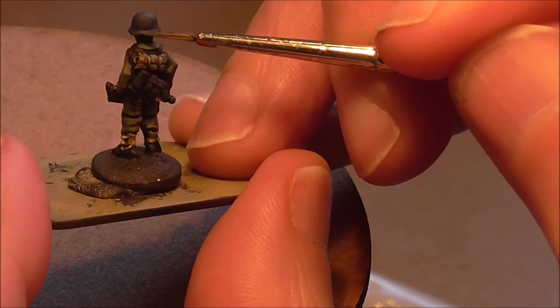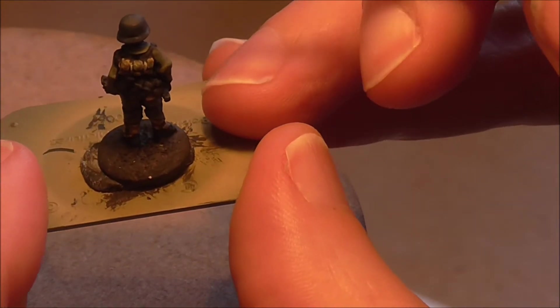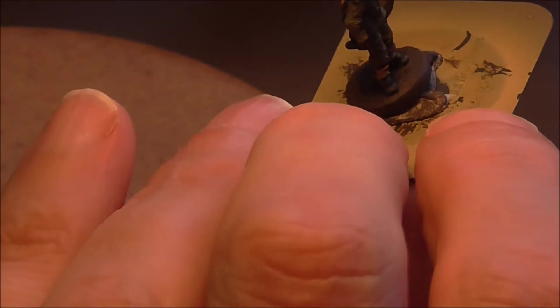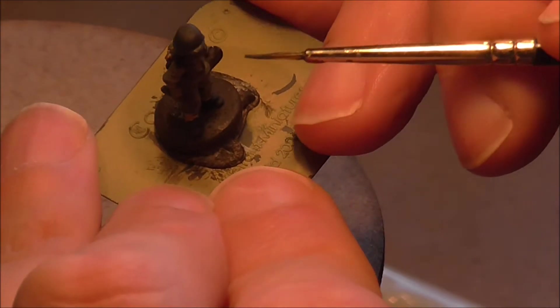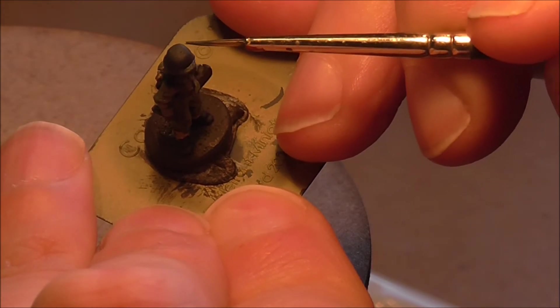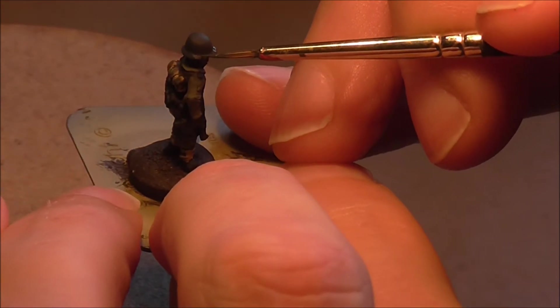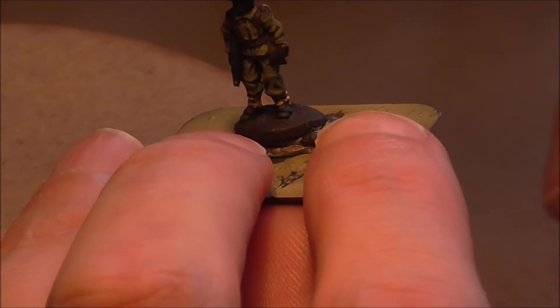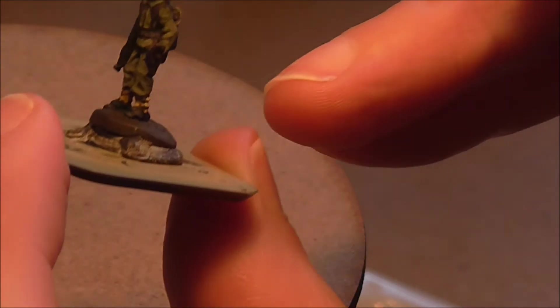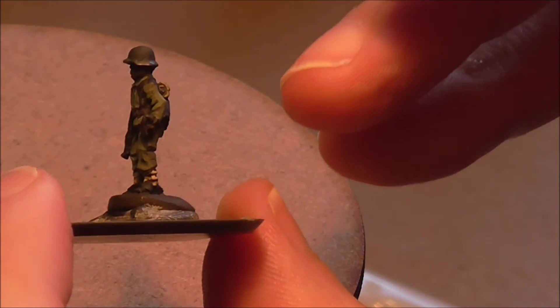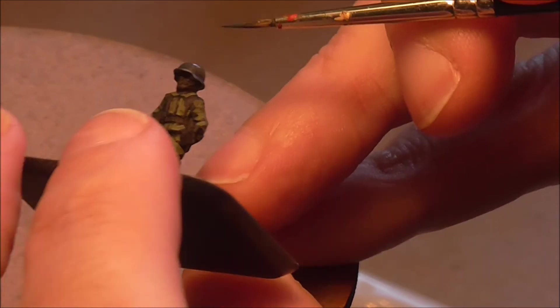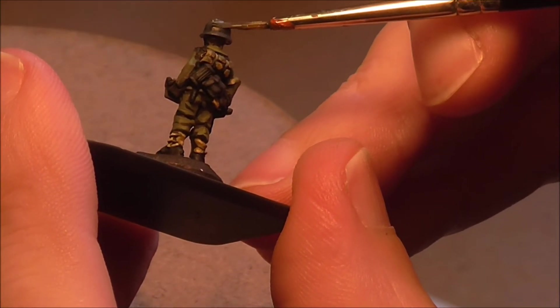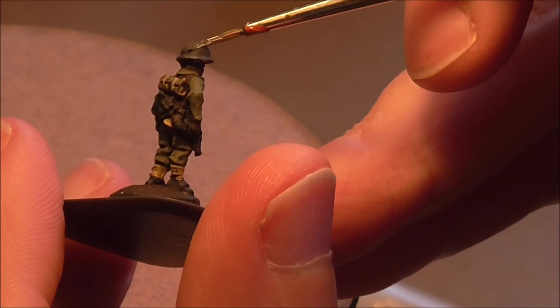And then I'm going to use German uniform model color 920 for the green element. And this just needs little dots. Simple as that. Then I'm going to take a nice bright color, Panzer Aces 315 light mud, and I'm just going to pick out the straps.